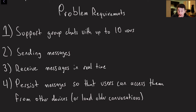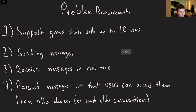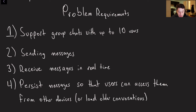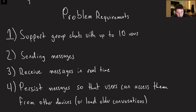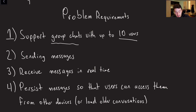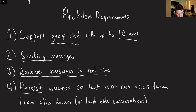Let's go through some formal problem requirements. We definitely need to support chats — specifically, let's imagine group chats with up to 10 users. We need to be able to send messages as a user and receive them on client devices in real time on every single open client device. We should also persist messages in some database so that logging in on a new device lets us access historical messages and load older conversations.